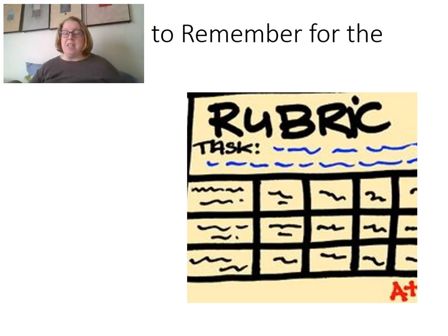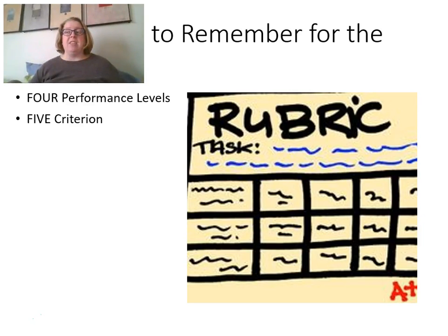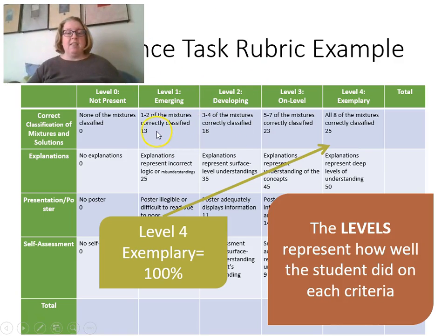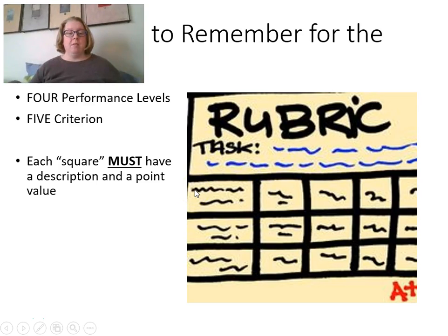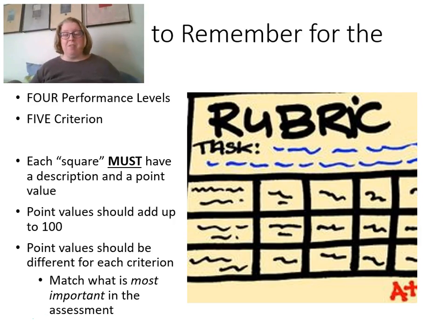Important things to remember for the lab assignment due this week: there should be four performance levels — one of them can be zero percent. Four performance levels and five criteria. You need to have at least five different things you're assessing. Each square needs to have both a description and a point value. Lots of people miss points on this assignment because they don't have both a description and a point value in every single square. The point values in total should add up to 100, and each criterion should be worth a different amount matching what's most important. If you have questions, please email me.